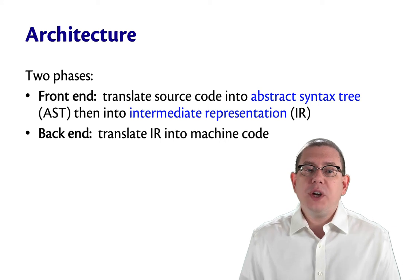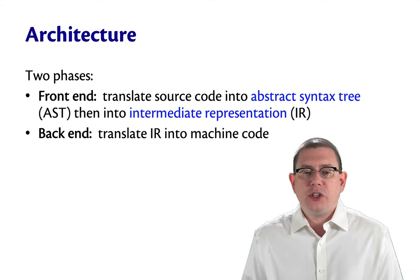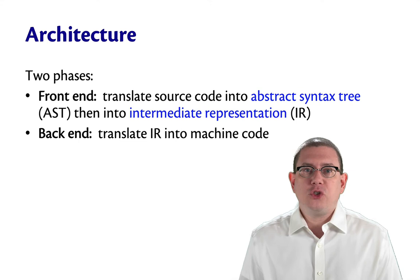When we look at a compiler or an interpreter, the architecture typically has two big pieces to it. There's phases of compilation, we say. The front end of a compiler has the job of translating the source code of that language into a data structure called an abstract syntax tree, or an AST.